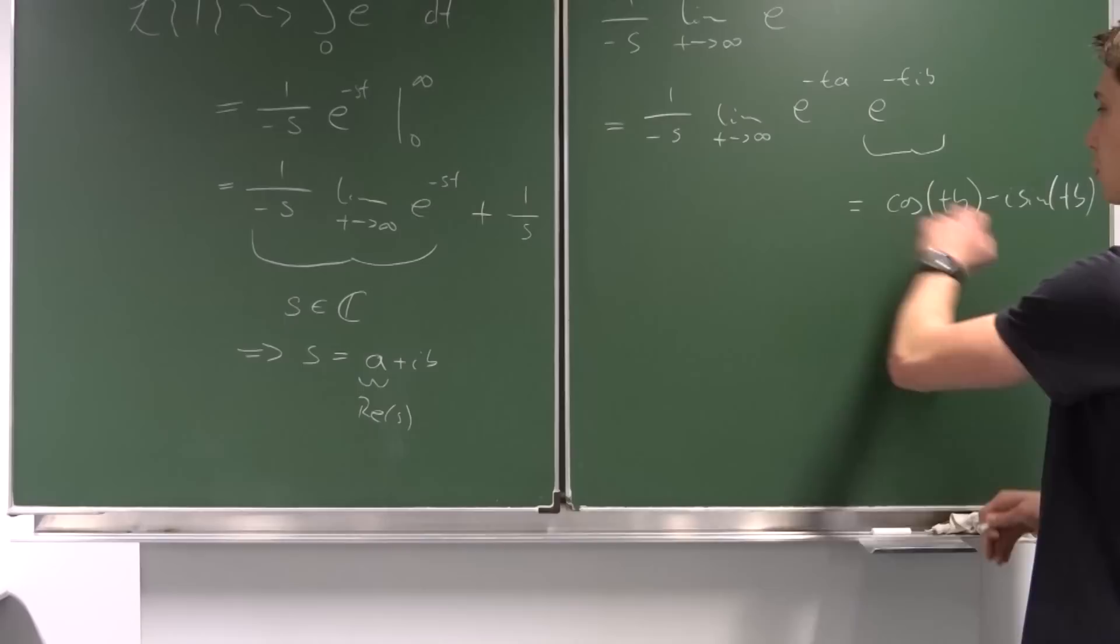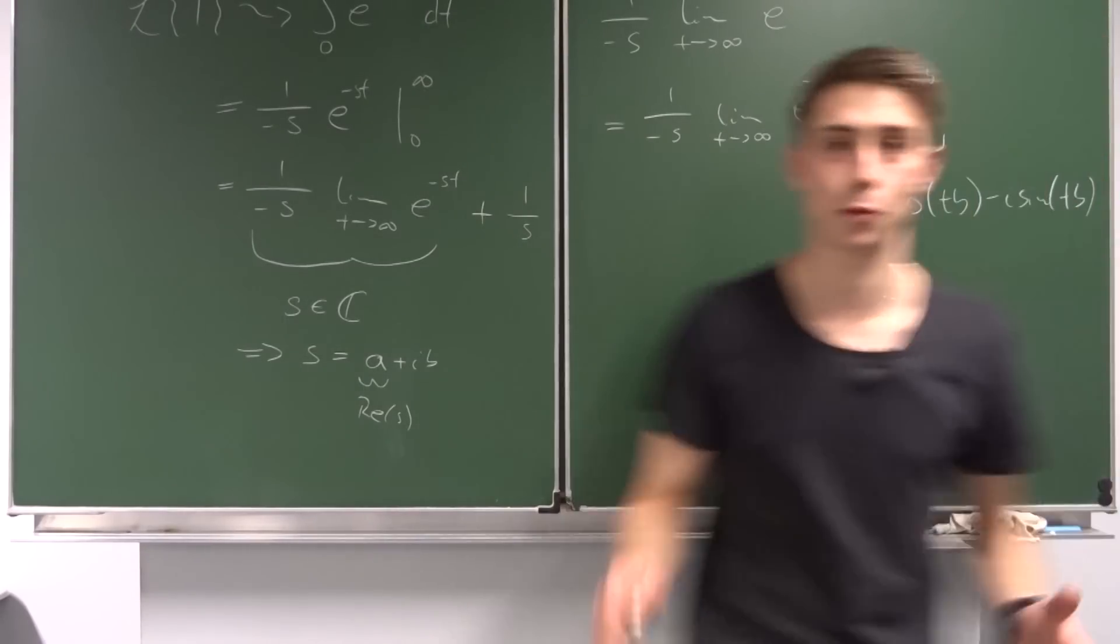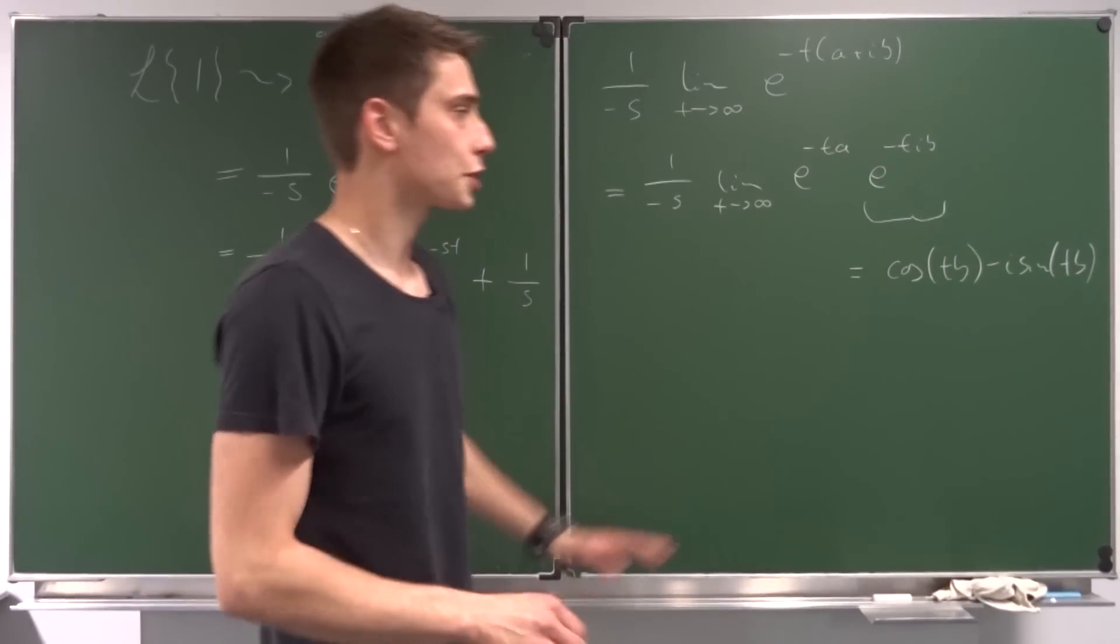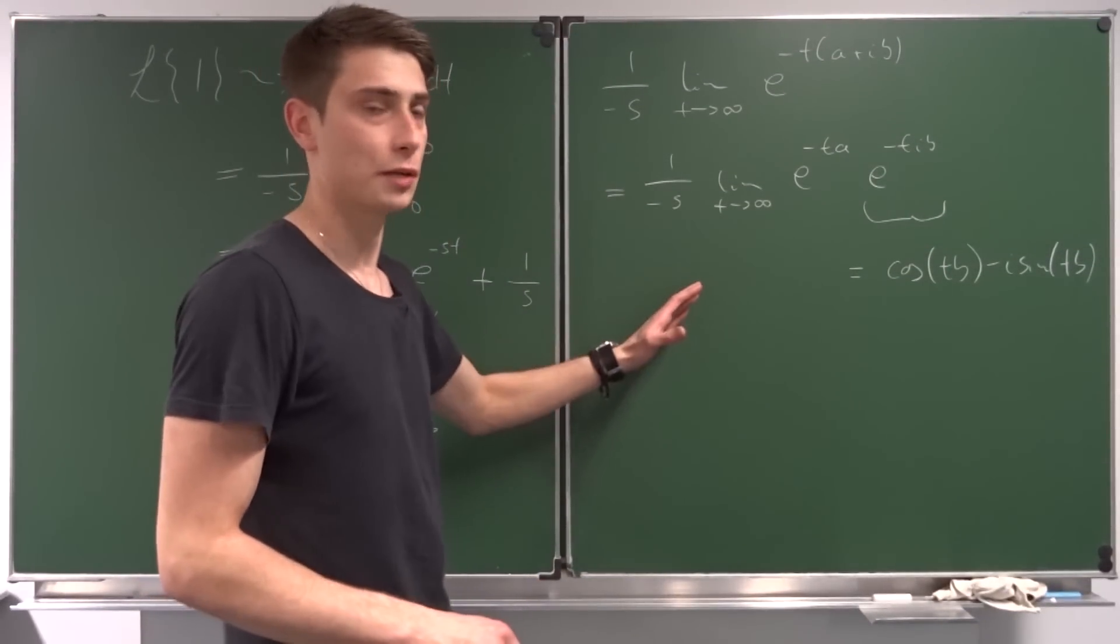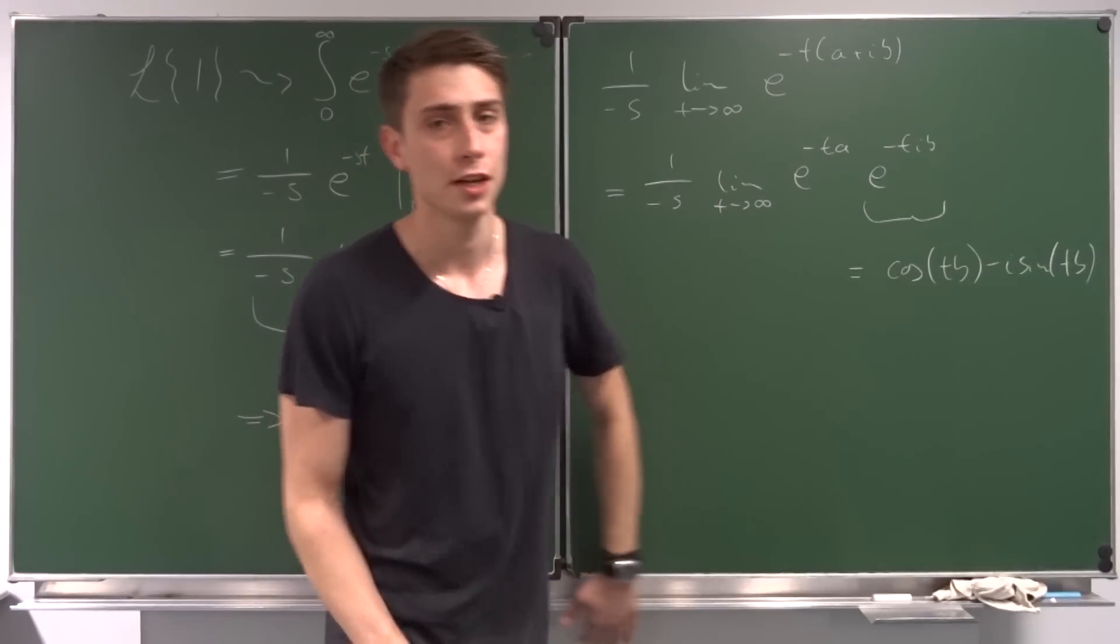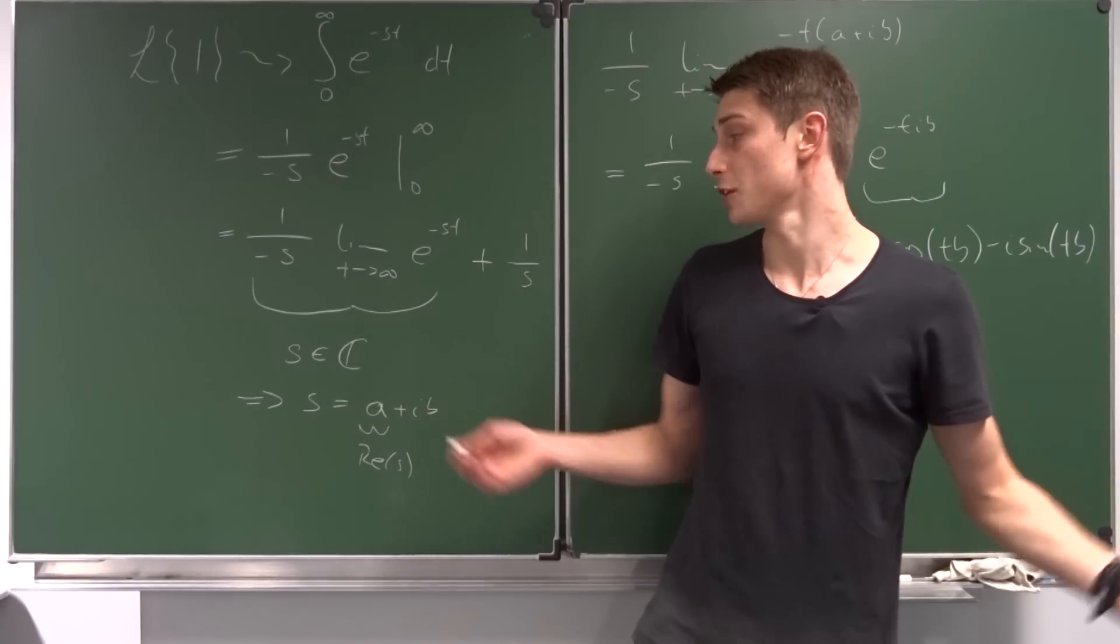When we let t approach infinity on this function right here, this won't approach anything. So in order for this to converge, and for all the other examples we're talking about, we just have to take a look at the real part to make this converge. I just wanted to make this clear if any of you ever wondered about that.